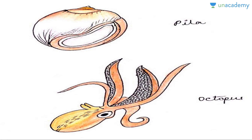The two examples given in the NCERT diagrams are Pila, which is the apple snail, and Octopus, also known as the devil fish. Thanks for watching this lesson on Mollusca. The next lesson will cover Echinodermata, with which we'll be covering all the non-chordate phyla.